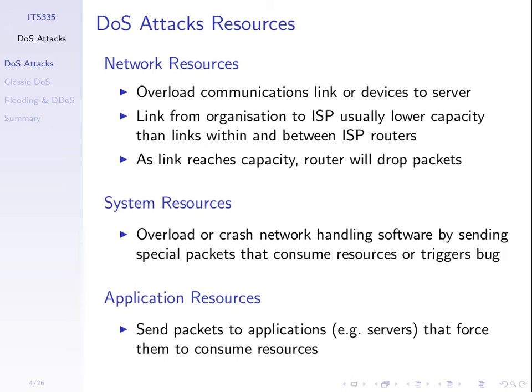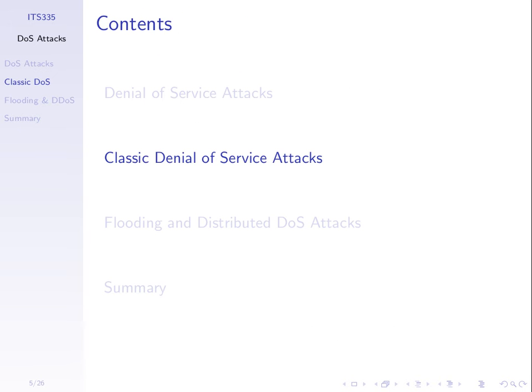Denial of service attacks will try to exhaust network resources, exhaust intermediate systems leading up to the application, or exhaust the application itself. We'll go through two very basic classic denial of service attacks — the original ones which were popularised but in many networks today are no longer successful because there are measures to stop them. But they illustrate the principles of denial of service attacks.